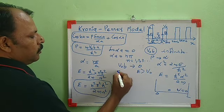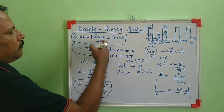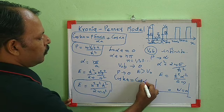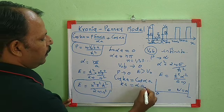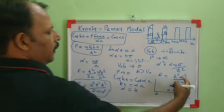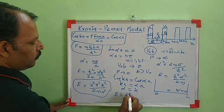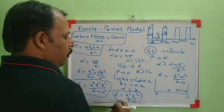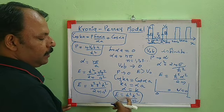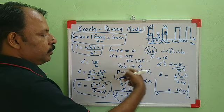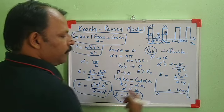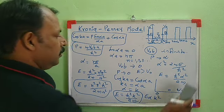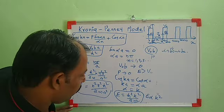When V₀b tends to 0, P tends to 0. When P tends to 0, the equation becomes cos(ka) = cos(αa), so ka = αa, meaning α = k. If α = k, the energy is E = ℏ²k²/2m. So when V₀b is negligibly small, it is like free electron theory, where E is proportional to k², giving a parabolic E vs k graph.